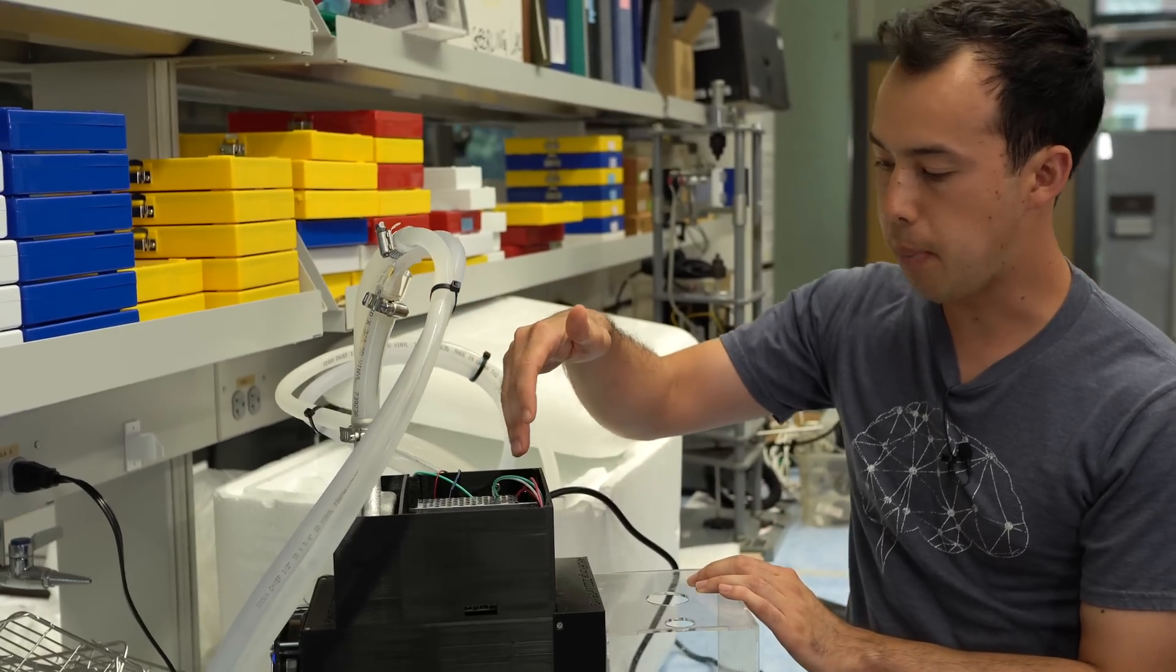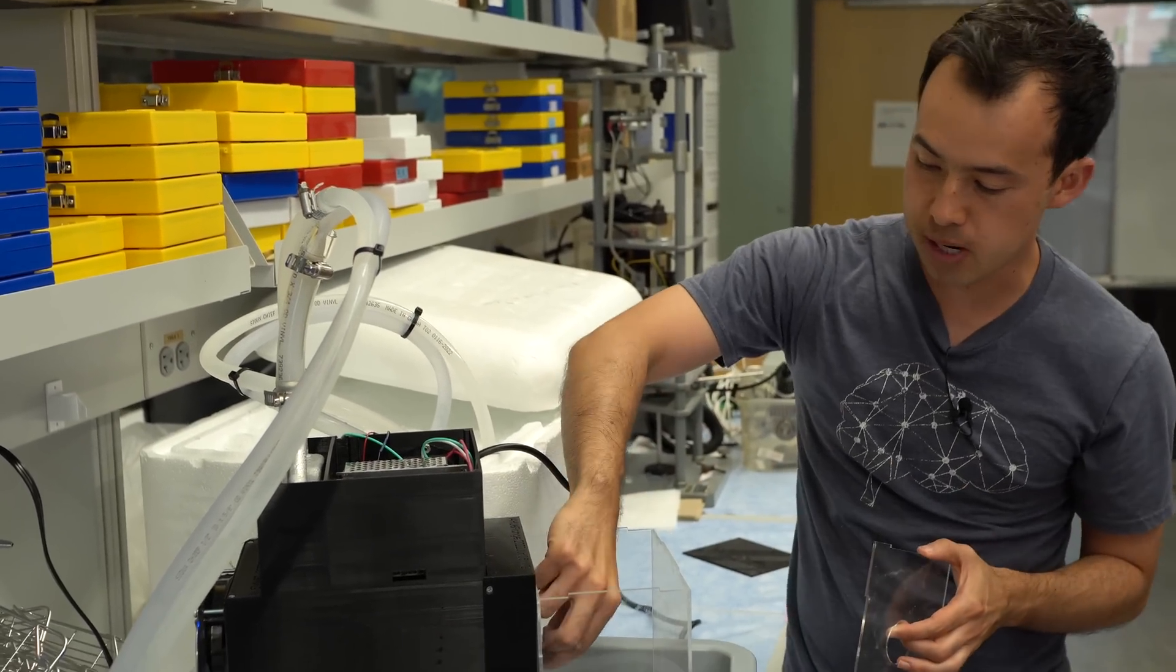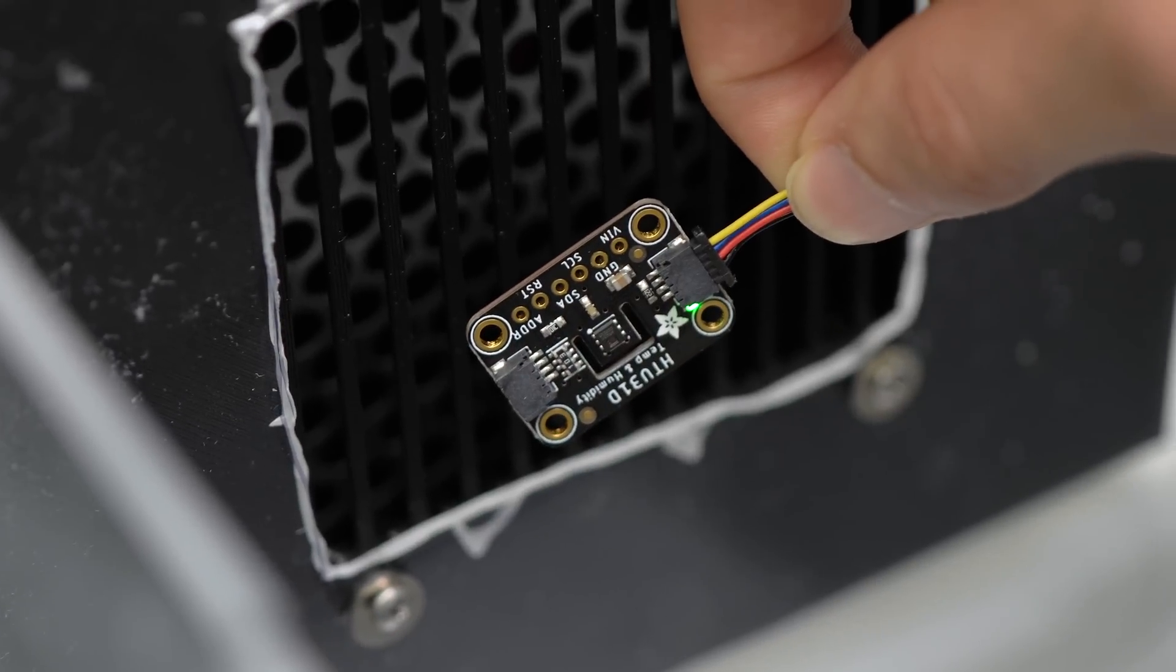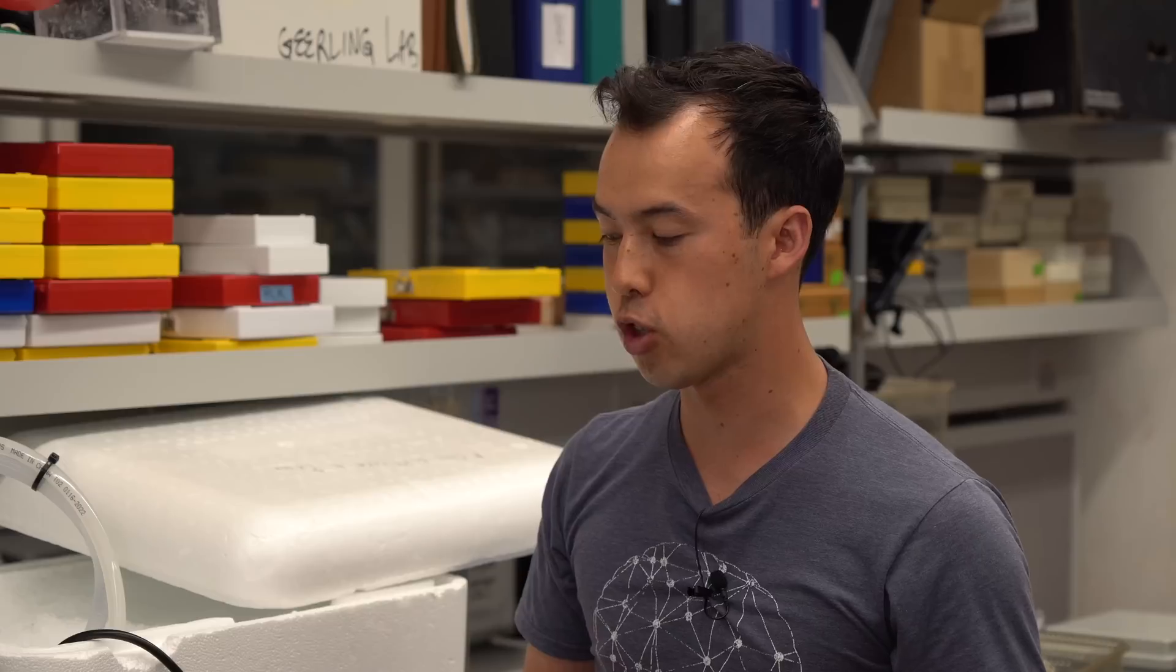So this Raspberry Pi measures the temperature. We have two temperature sensors here. Here's the external one and there's an internal one inside of there. It controls the nichrome wire, the resistors, with a PID loop. So when it gets a little too cold below its set temperature, it ramps up the heaters. When it gets a little above the set temperature, it ramps down the heaters.